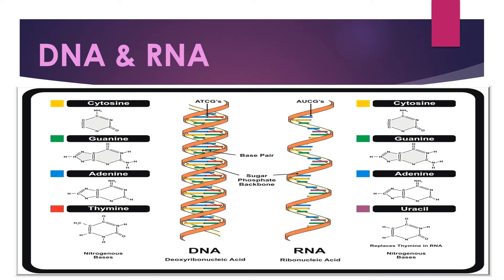DNA has four nitrogenous bases: cytosine, guanine, adenine, and thymine. RNA also has four nitrogenous bases, three of them being similar to DNA — cytosine, guanine, and adenine — but thymine in RNA is replaced by a nitrogenous base called uracil.